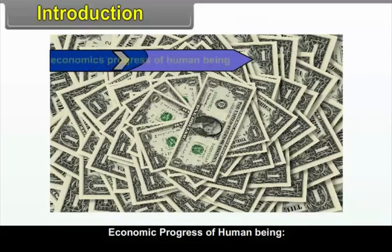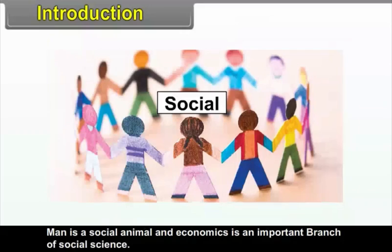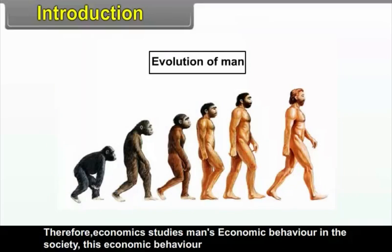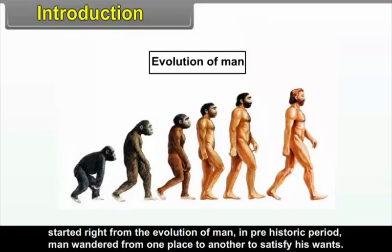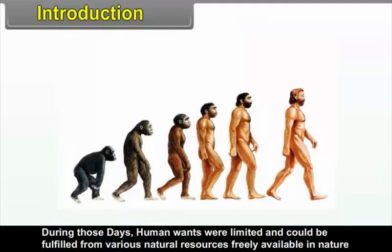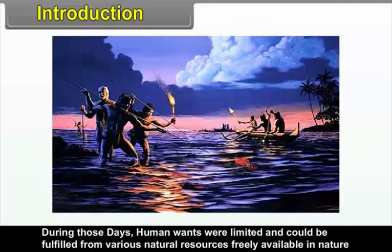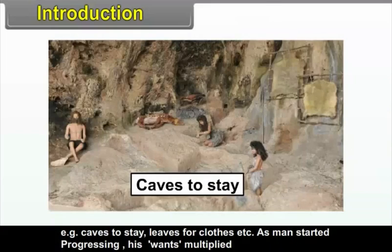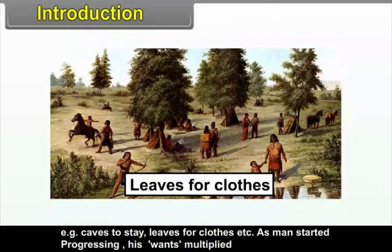Man is a social animal and Economics is an important branch of social science. Therefore, Economics studies man's economic behaviour in society. This economic behaviour started right from the evolution of man. In the prehistoric period, man wandered from one place to another to satisfy his wants. During those days, human wants were limited and could be fulfilled from various natural resources freely available in nature — for example, caves to stay, leaves for clothes, etc.